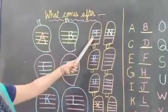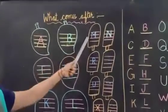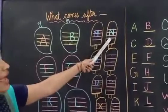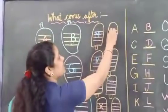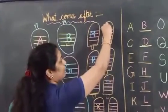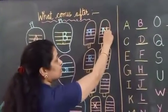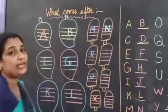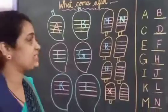Next, which letter is this? M. M for monkey. After M comes N for nest. How to write N? Standing line, one more standing line, and a slanting line — it's made N. N for nest.